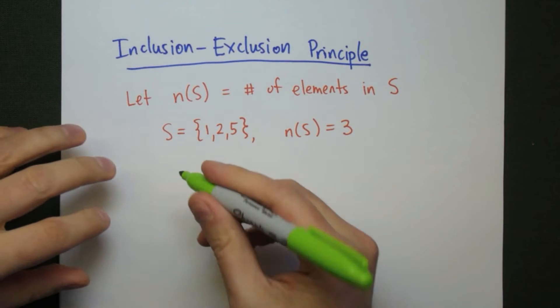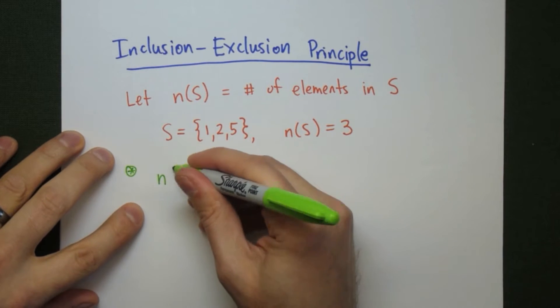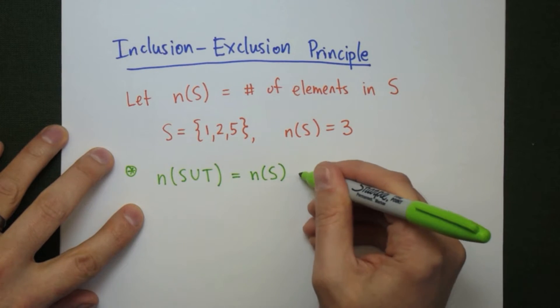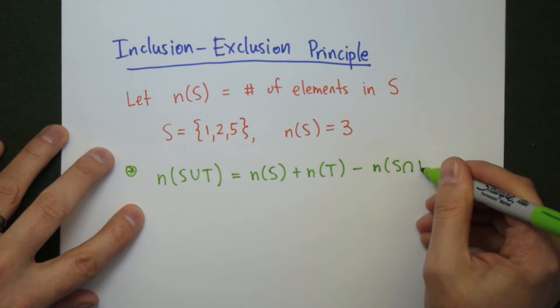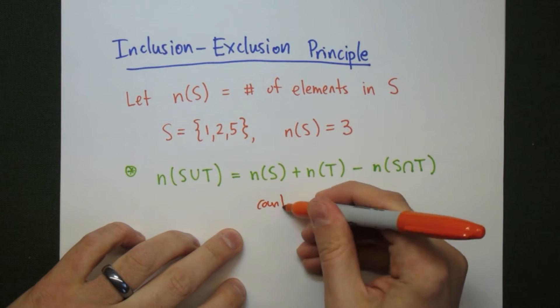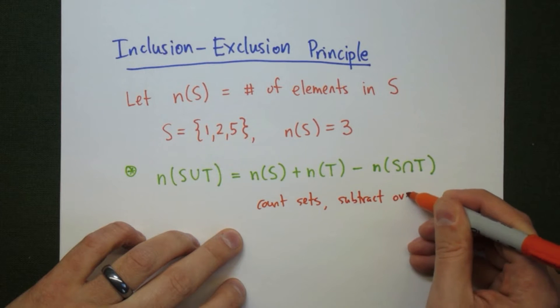The law of inclusion-exclusion says that we can count the number of elements in the union, S union T, where S and T are sets, by counting the number of elements in each individual set, N(S) plus N(T), and subtracting the overlap, the number of elements in the intersection. So we're counting the sets, and then we're subtracting the overlap.